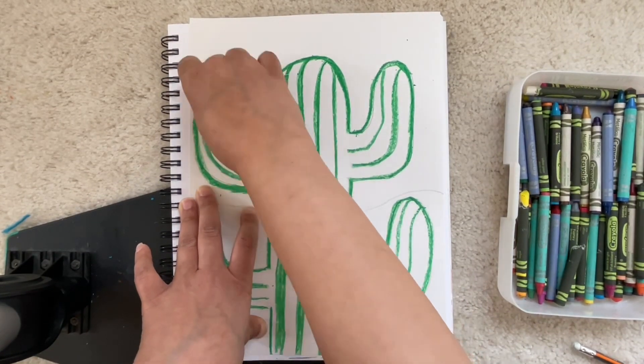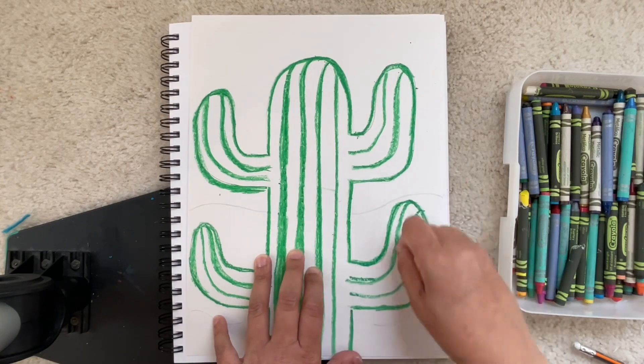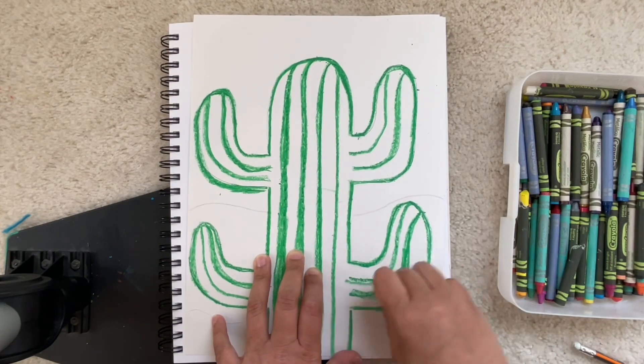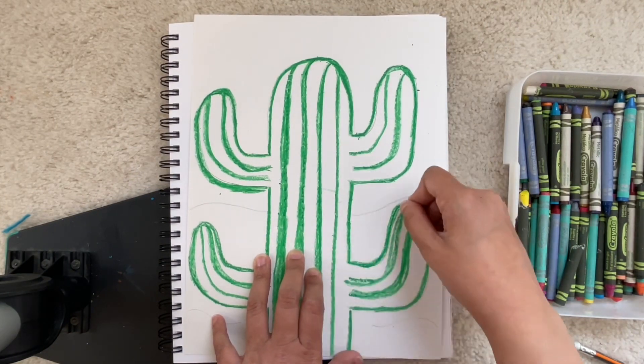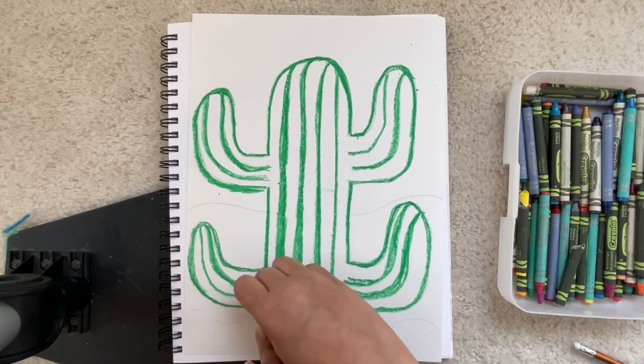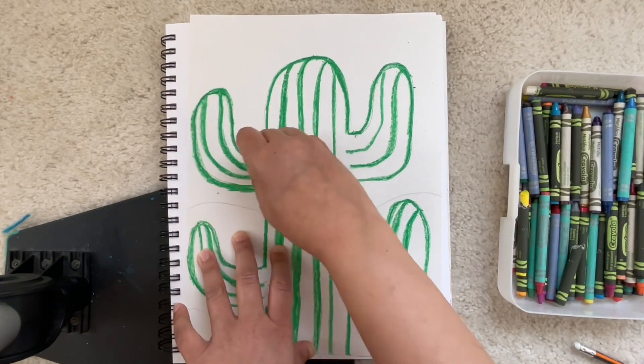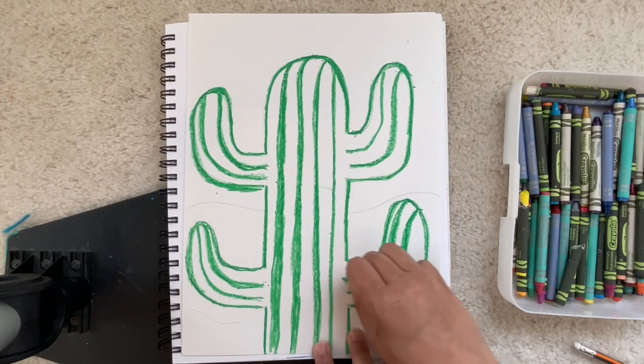Awesome. Now it's time to color. You will go back to your seat and color, draw and outline your cactus and color the rest of your art. Thank you.